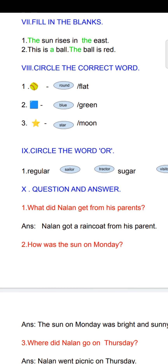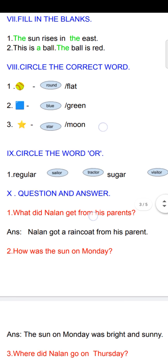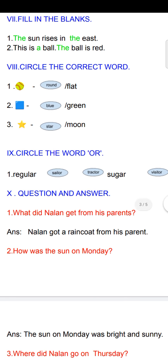Next, Roman letter nine: circle the OR words. You have to find and circle words ending in O-R. Regular — last letter is A-R, not O-R, so no need to circle. Sailor — O-R ending, so you have to circle. Tractor — O-R ending, circle it. Sugar — A-R ending, so don't circle. Visitor — O-R ending, circle it.